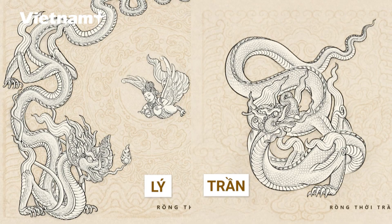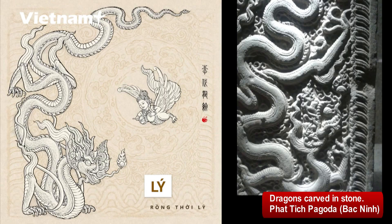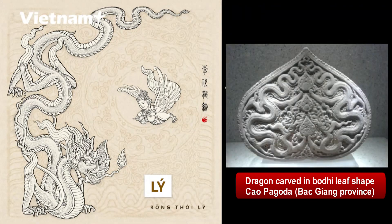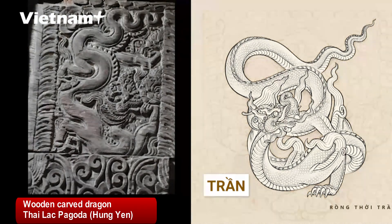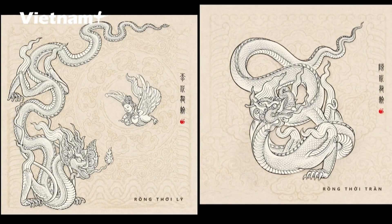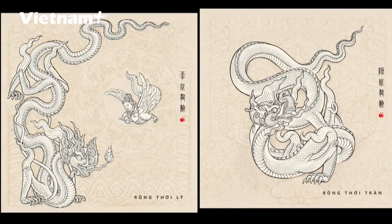Li and Tran Dragons: Overall, the Tran Dragon resembles that of the Li period, with a thicker, more robust body due to the preference for tight compositions during the Li period. During the Tran period, artisans had more freedom in crafting dragons, resulting in a relaxed composition. Li dragons were influenced by Buddhism, exhibiting elegance, while Tran Dragons portrayed strength inspired by East Asian cultures.